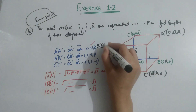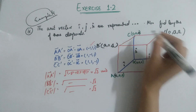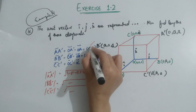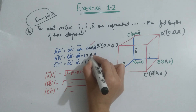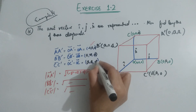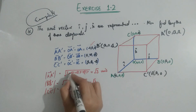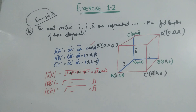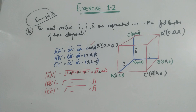Continuing with the general case, the diagonal vectors are (minus a, a, a), (a, minus a, a), and (a, a, minus a), giving a length of square root 3 times a units. This covers part number nine and part number ten.